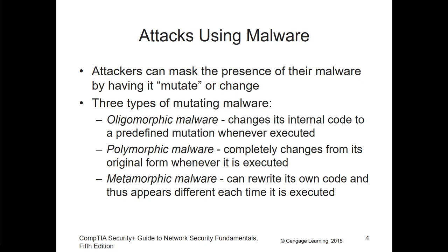There are three common types of mutating malware. Polymorphic malware is completely changed from its original when it's executed, and changes its internal code to a predefined mutation whenever executed. Metamorphic malware can rewrite its own code and thus appears different each time it's executed. The goal of polymorphic and metamorphic malware is to have its signature changed when run, to help keep it from being detected.